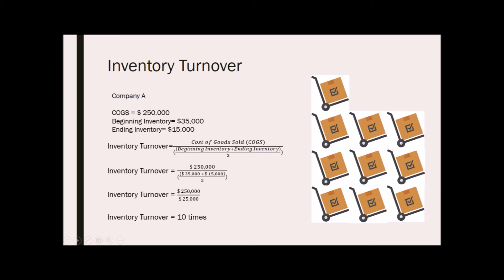The result is the number of times the inventory is sold and restocked. Therefore, Company A bought and sold their inventories 10 times. If the figure is too high, the company should look out for stock outs. And if the figure is too low, the company may have an obsolete inventory. Therefore, a high ratio indicates that the company is able to manage their inventories efficiently.